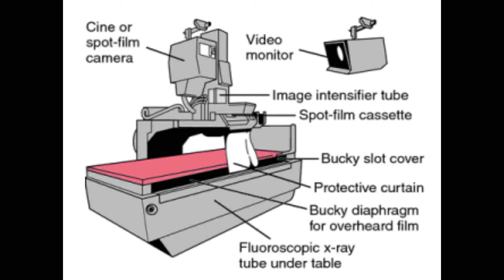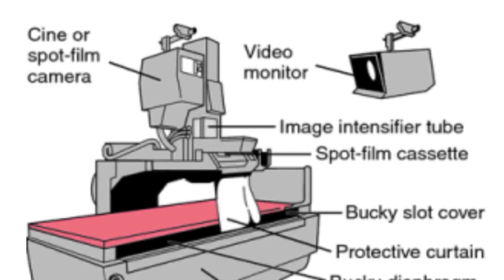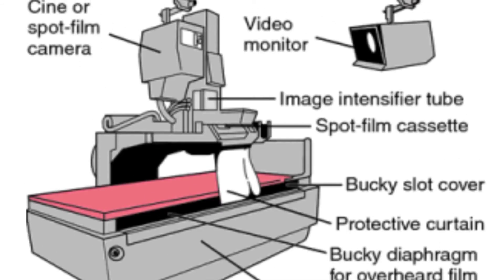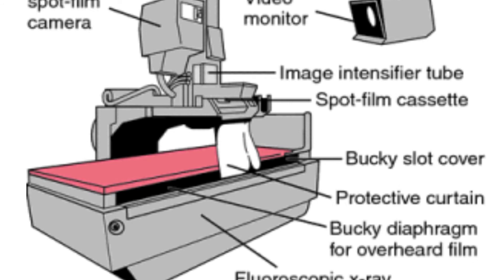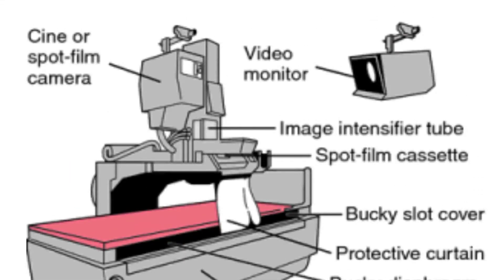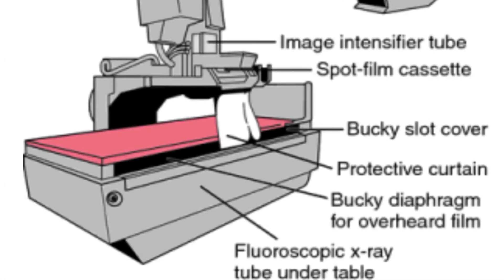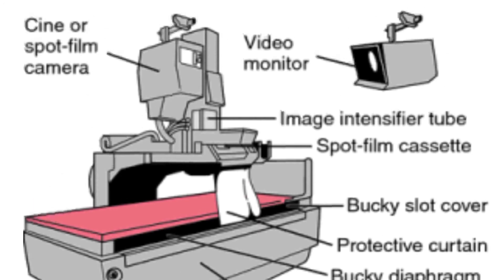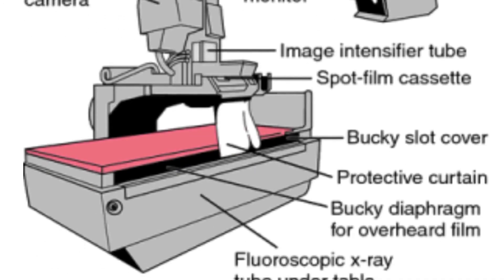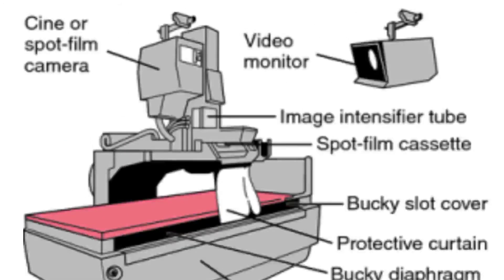Another form of fluoroscopy system includes a camera, an image intensifier tube on top, and a video monitor on the side. Components visible in the diagram include: a spot film cassette slot, a bucket slot, the patient table, a protective curtain, and the fluoroscopy tube. In this type, the X-ray tube is under the table and the image detector is on top, opposite to the ceiling-mount arrangement.